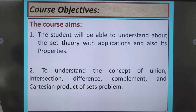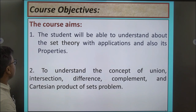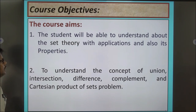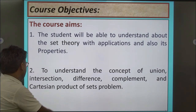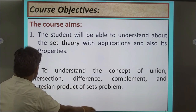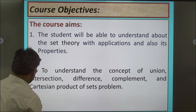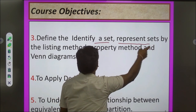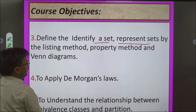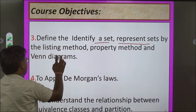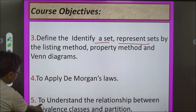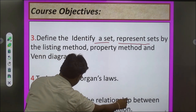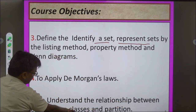Course Objective: The course aims for students to understand set theory with its applications and properties; understand the concepts of union, intersection, difference, complement, and Cartesian product of sets; define and identify a set; represent sets by the listing method and Venn diagrams; apply De Morgan's Law; and understand the relationship between equivalence classes and partitions.